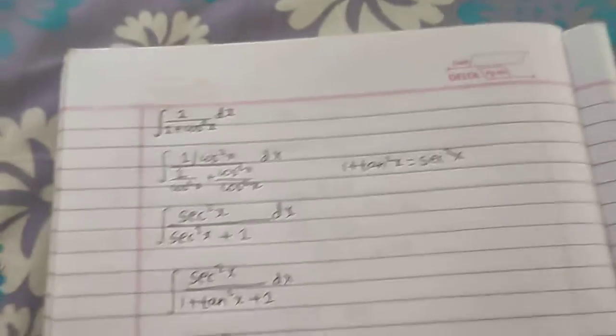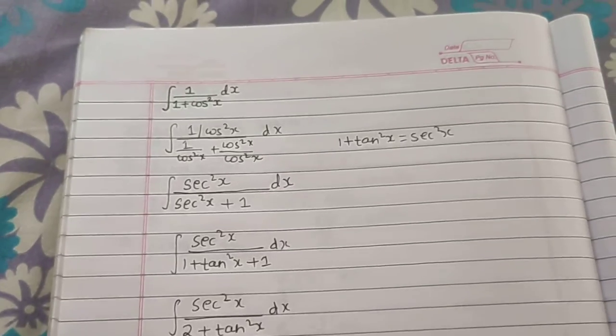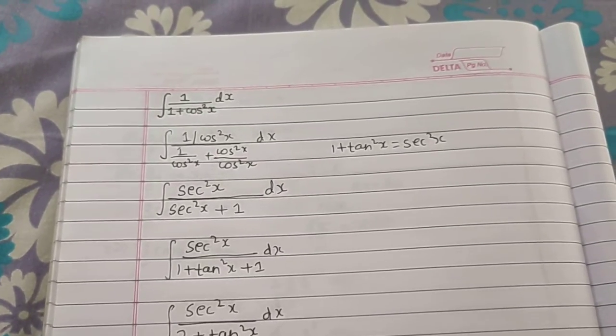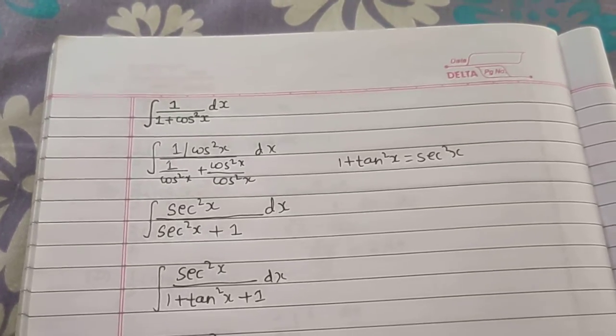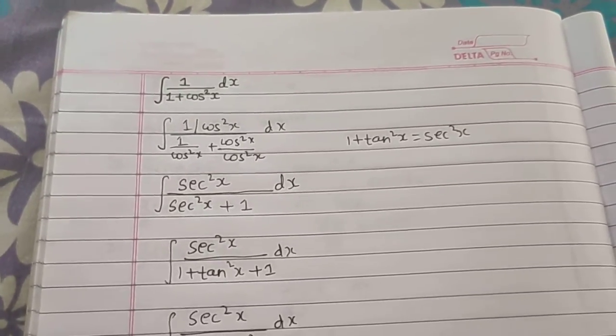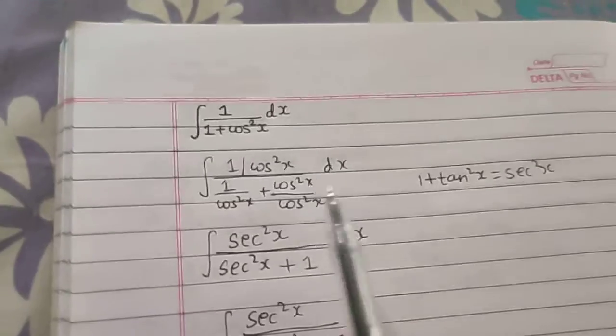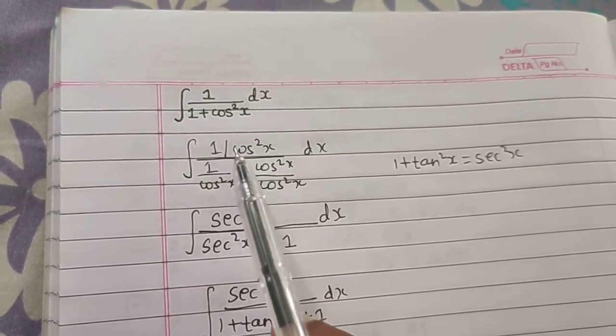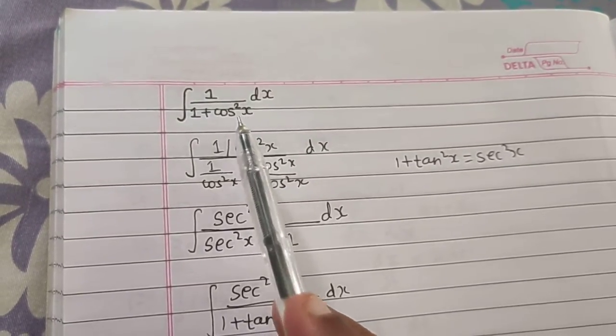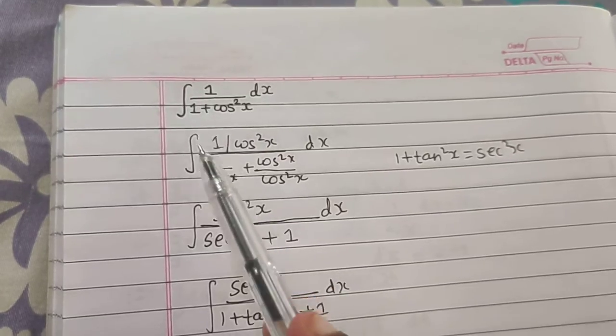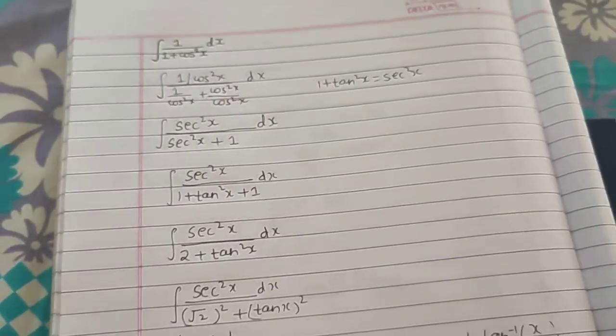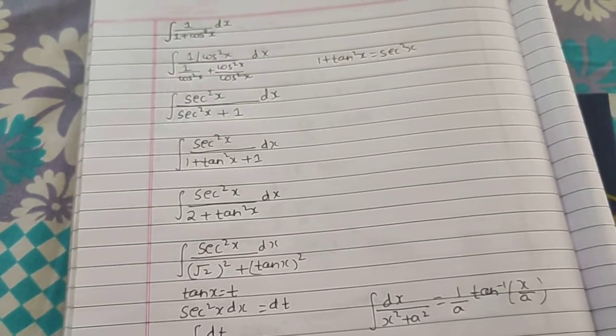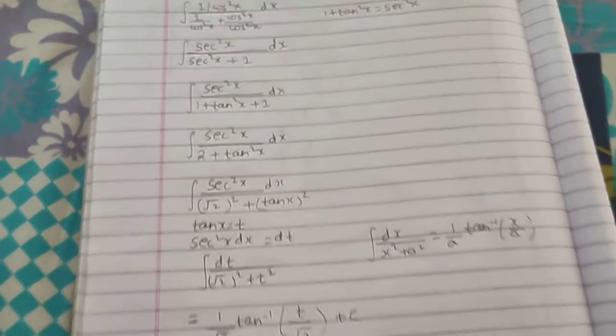It was difficult in the first step only. Otherwise it was a smooth transition, because if you can think that we can divide by cos²x in numerator and denominator, then the steps are smooth and you will get to the answer.